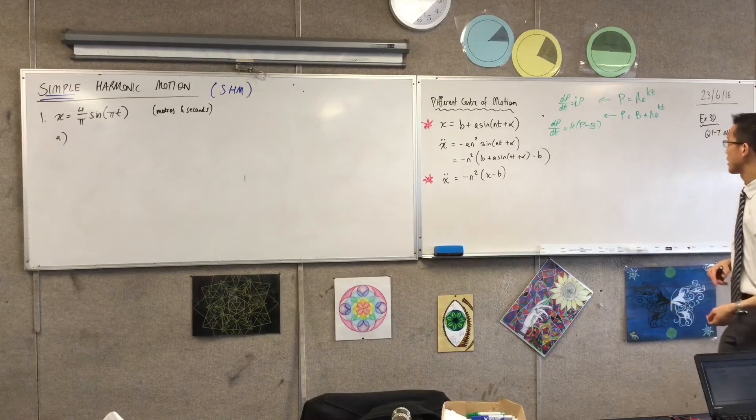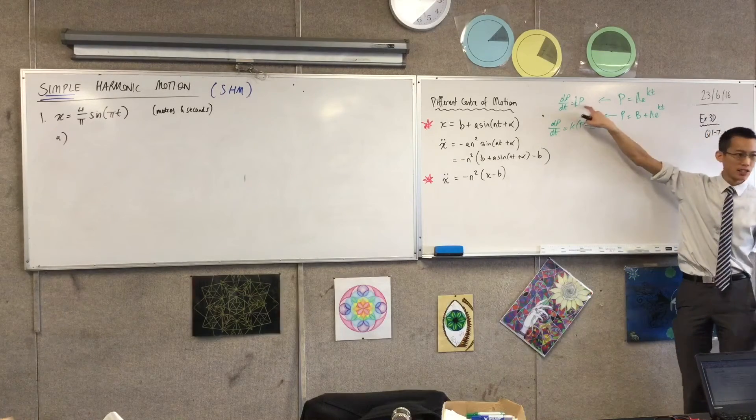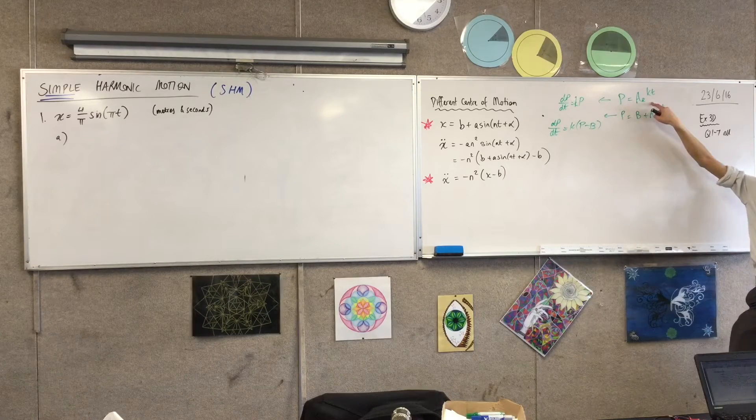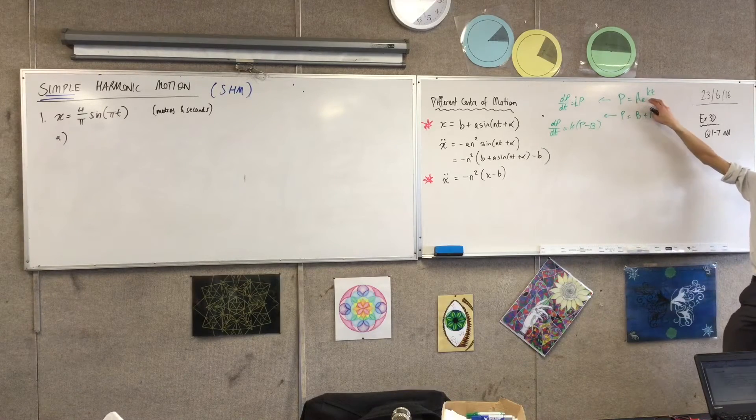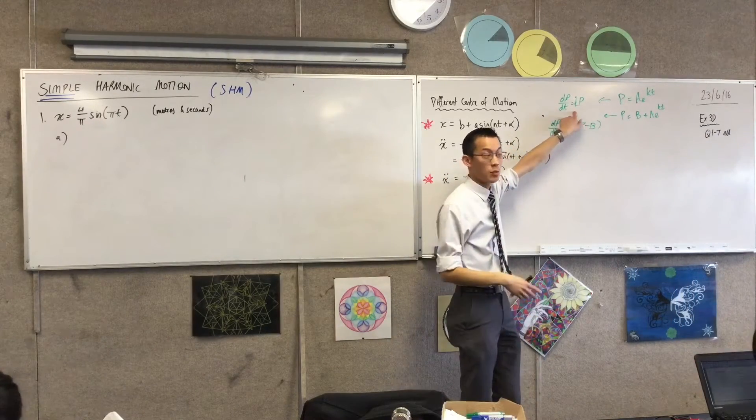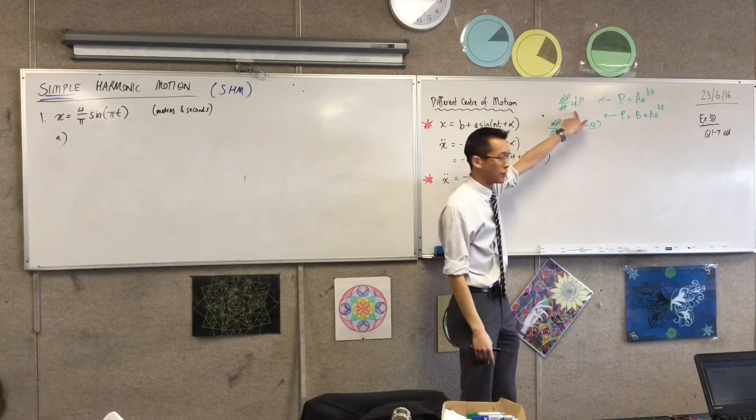Just like in exponential growth and decay, do you remember a lot of the time you had to show that this - frequently the first part of a question was, please show me that this satisfies the differential equation. Because this is what makes natural growth and decay natural growth and decay.